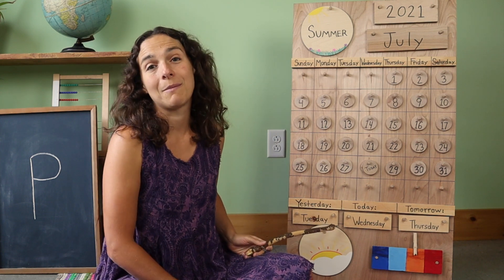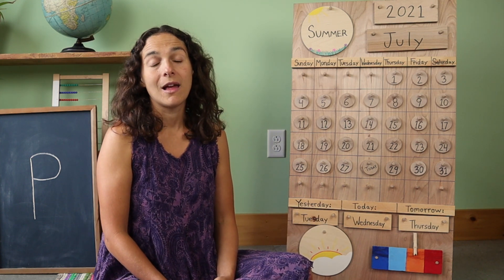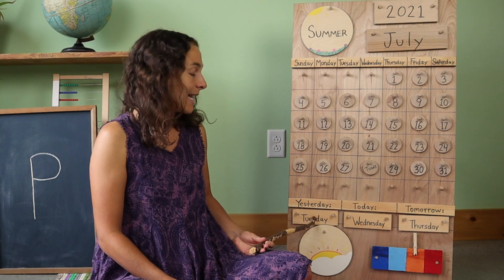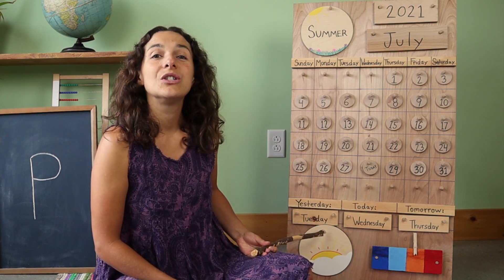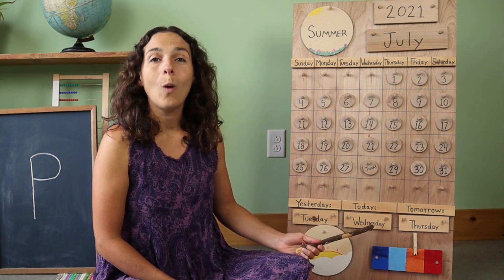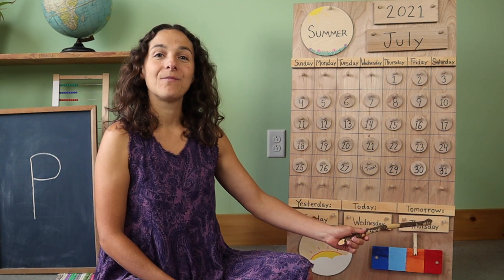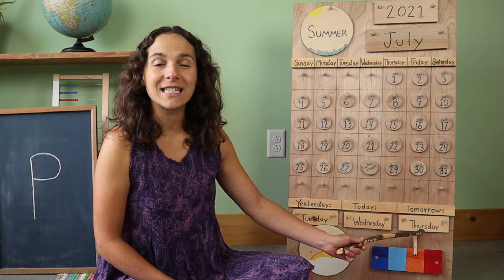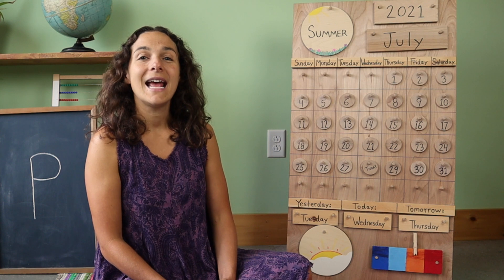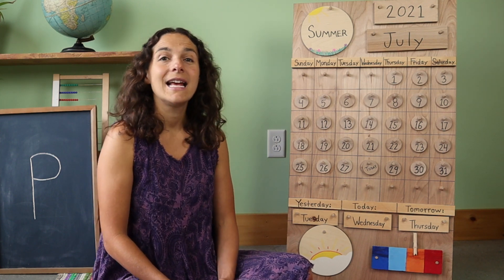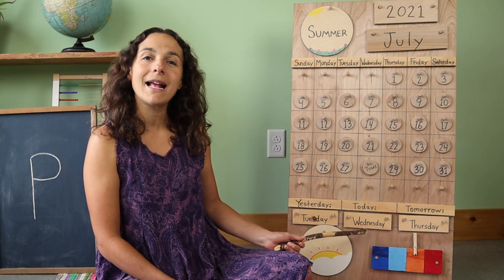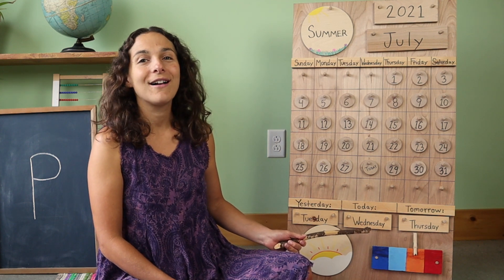Now let's go down to the bottom of the chart and go over the days together. I will give you the sound that the day starts with, and if you know what the day is, you can say it with me. Yesterday was Tuesday. That means that today is Wednesday. Tomorrow will be Thursday. Let's sing 'Today is Wednesday' together. Today is Wednesday, today is Wednesday, today is Wednesday all day long.